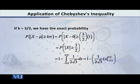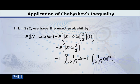The integrand is 1 over 2 times square root of 3. You may be confused about the limits: why minus 3/2 to plus 3/2? Remember, the probability of |x| < 3/2 actually means the probability of x lying between minus 3/2 and plus 3/2. This follows directly from the concept of absolute value.